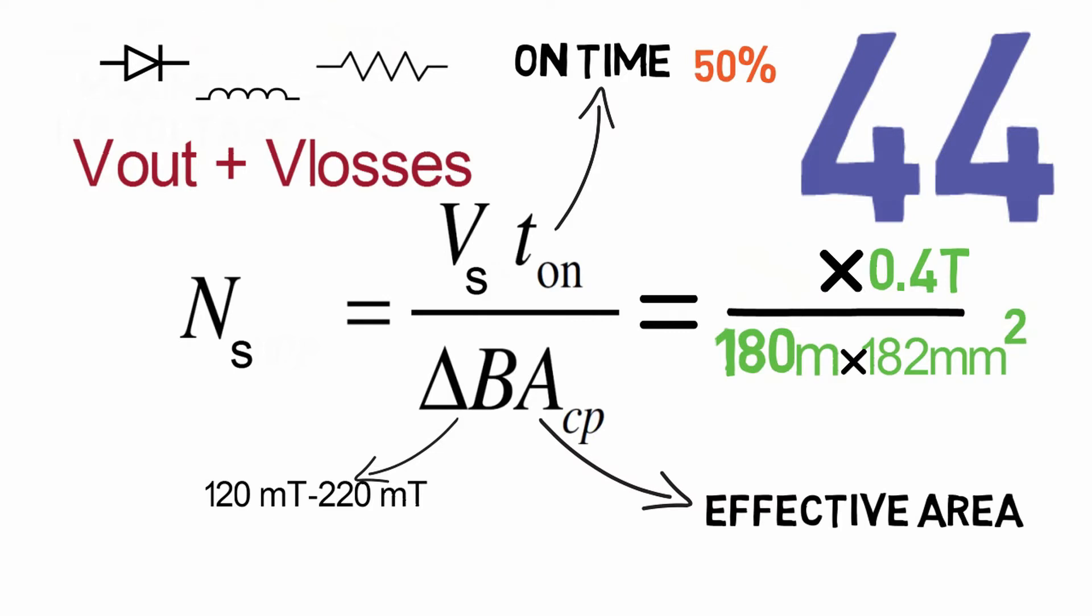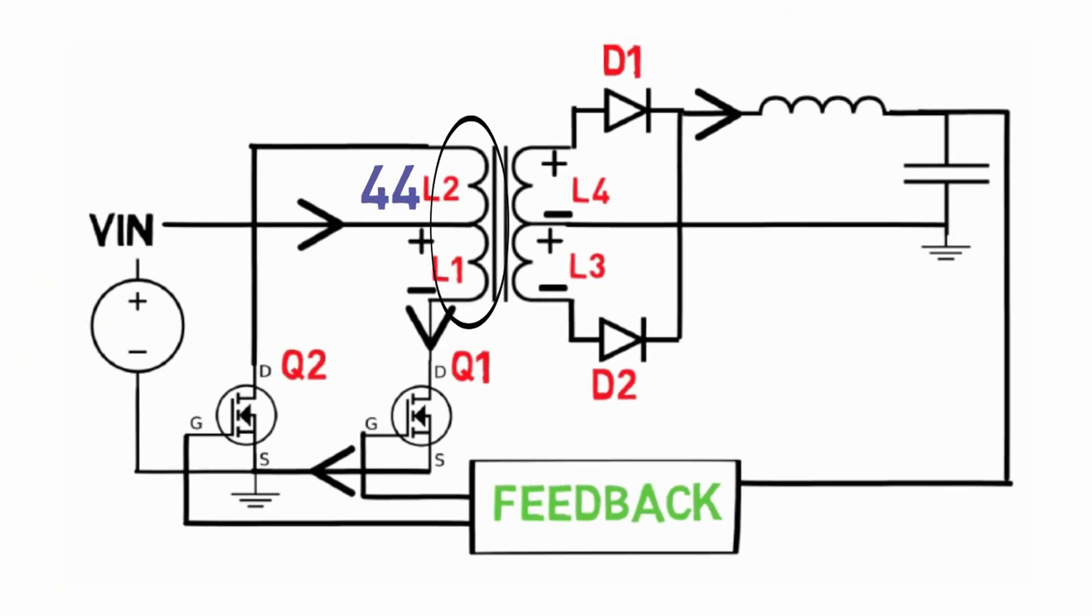That will be Vout plus V losses. These losses will be of rectifier diodes, choke wiring, and transformer resistance. Consider it as 5 volts. Hence Ns will come out as 26. There will be four types of winding on the core as you can see: 44, 44, and on secondary side 26, 26. Now we need to select the proper wire size.